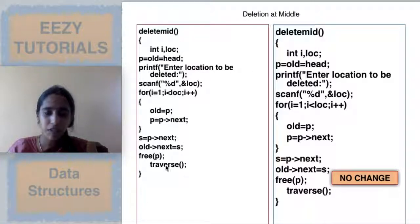The deletion at the middle for singly linear linked list in a separate video in detail we saw with visualization. So if you want you can refer to that. The same code you can use for circular linked list also.